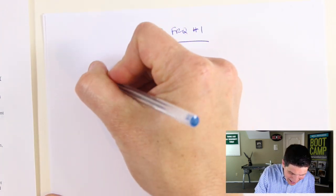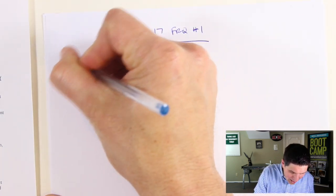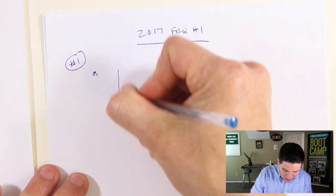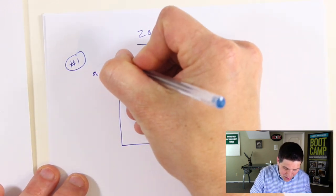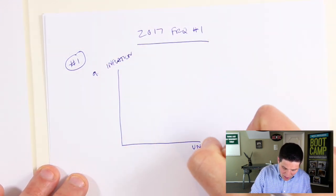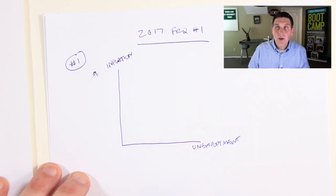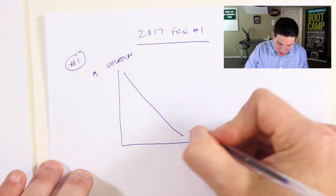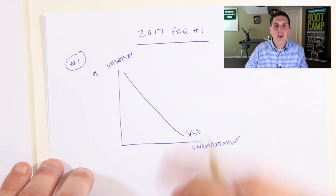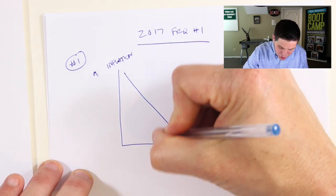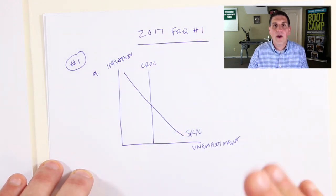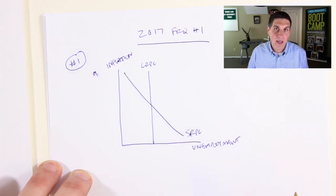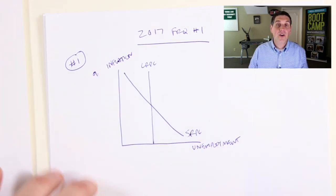So in part A of question number one, they said draw the Phillips curve using the numbers they gave you. So if you remember the Phillips curve, it looks like this. You start off with inflation up here and we have unemployment. So inflation and unemployment, and you can see there is a negative relationship between the two. This is the short run Phillips curve. Now you should memorize this graph and know this graph. You should understand why there's also a long run Phillips curve. In the long run, there is no relationship or there's no trade off between unemployment and inflation in the long run. In the short run there is. So if you drew this graph, congratulations, you get one point.